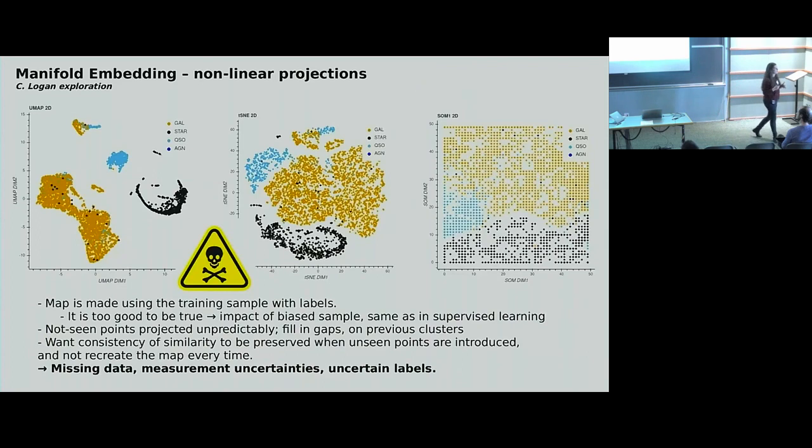And once you have all of these classifications and probabilities, because this is a random forest, our favorite, you can bring all of the probabilities together and slice and dice your sample if you prefer a pure sample or if you prefer a complete sample, depending on what you're trying to achieve later. We applied that to the XXL survey, which is 50 square degrees that has extensive coverage in the x-rays from XMM-Newton.